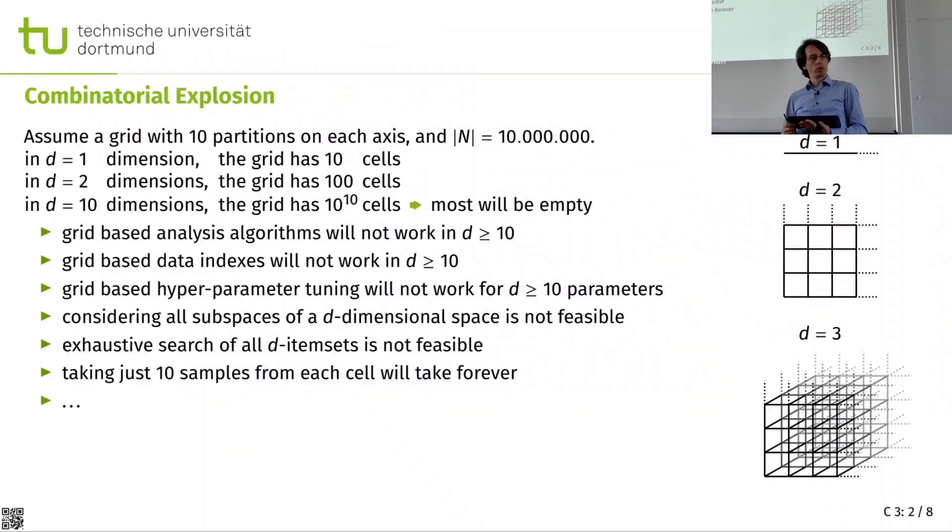Combinatorial explosion is the one that's definitely easiest to understand and to grasp. If you have a one dimensional data space and we want to make buckets, we want to make 10 buckets in this one dimension. Or in this case, I make three buckets, then I get three buckets, respectively 10 buckets. Easy.